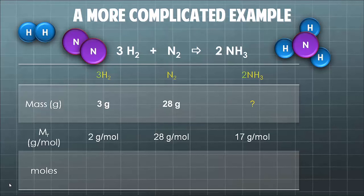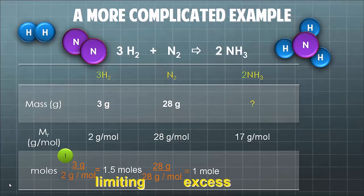How are we going to work out how much ammonia we can produce? Because we've actually got two pieces of information here. So the first step is to work out how many moles of each of the two things you've got. Here we see we've got 1.5 moles of hydrogen present and we've got 1 mole of nitrogen present.